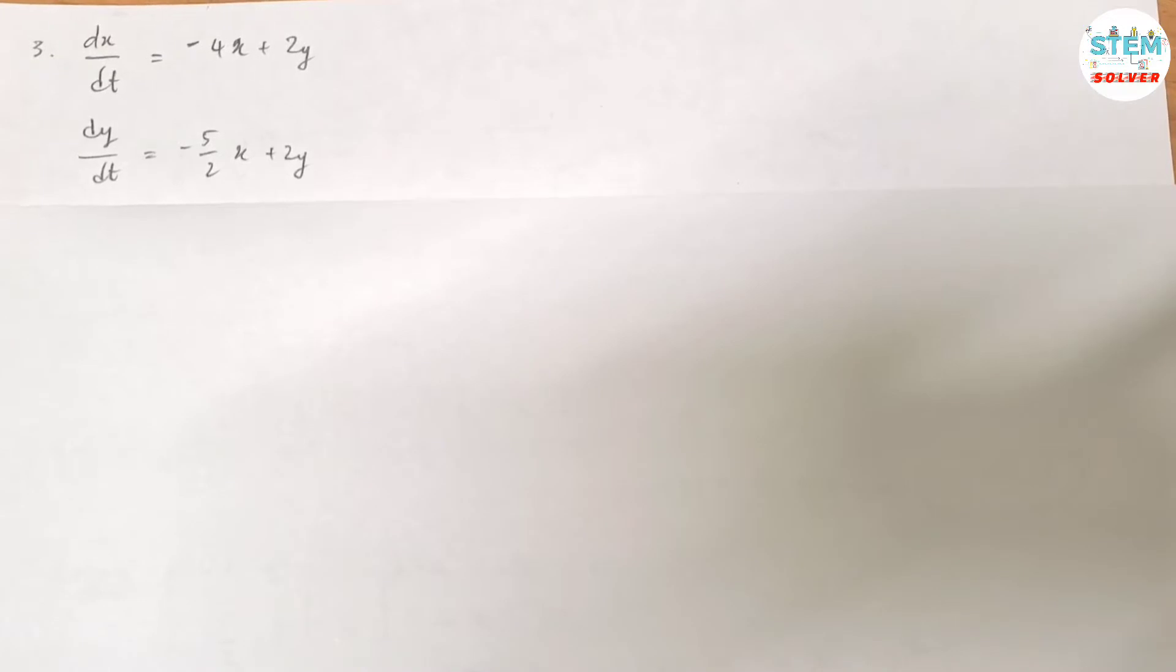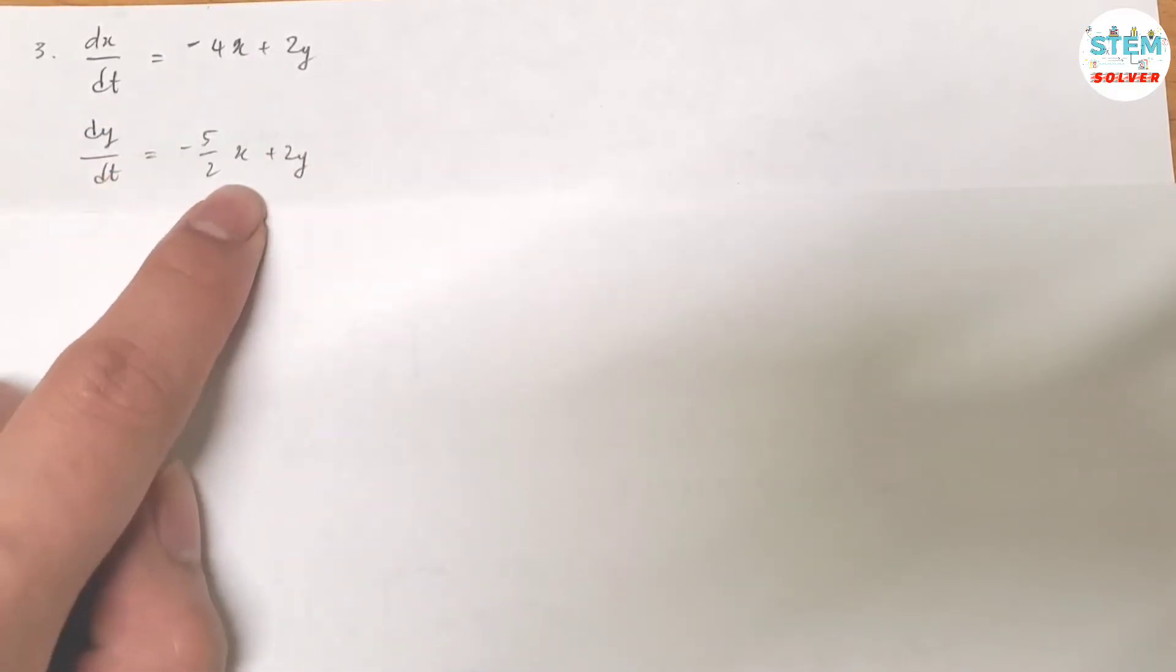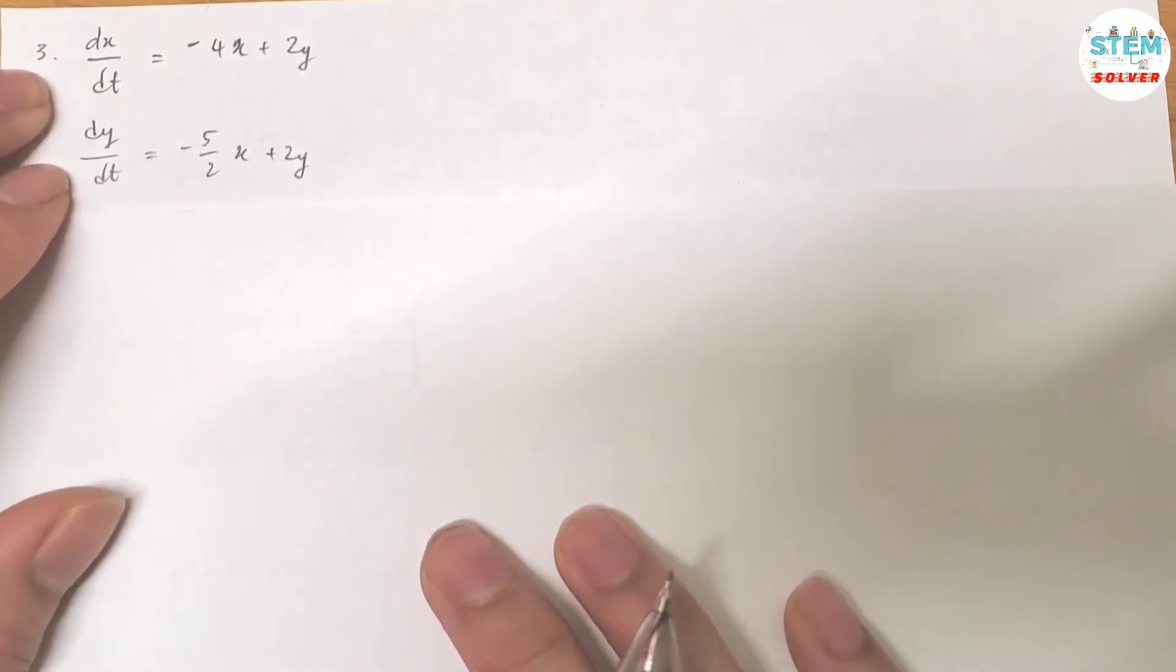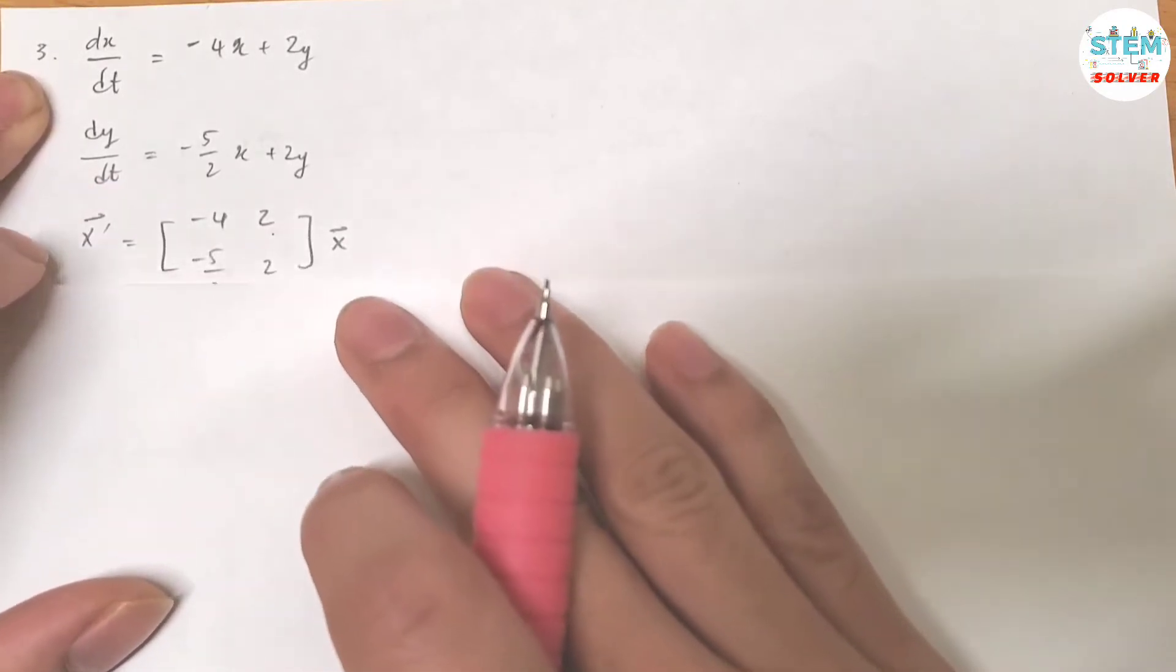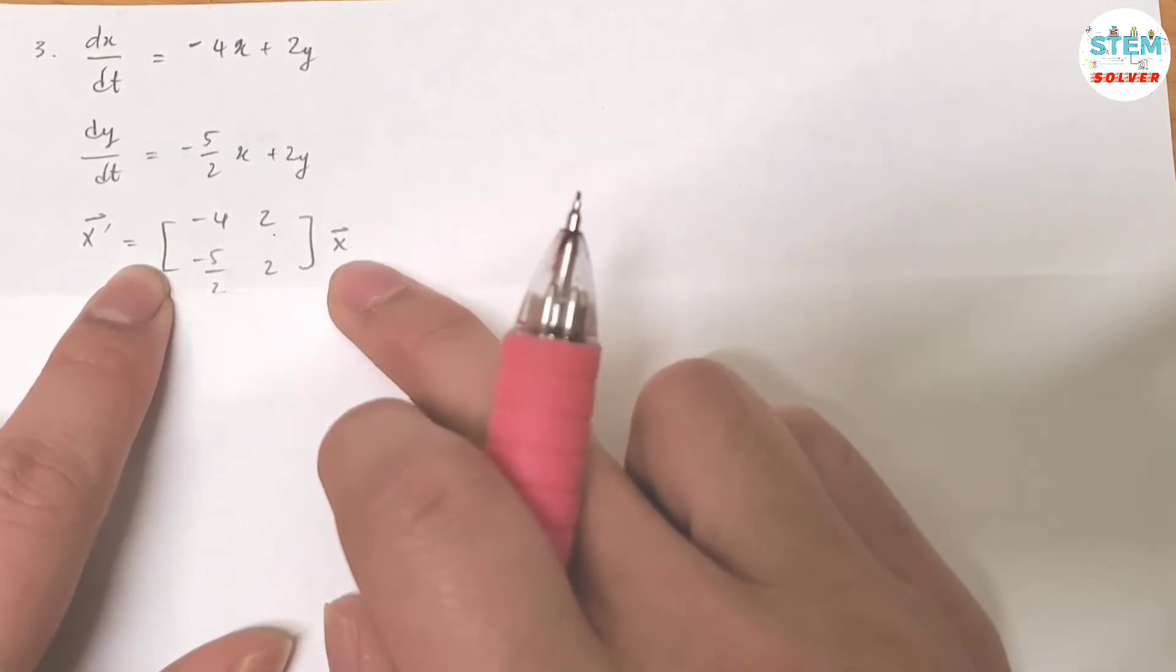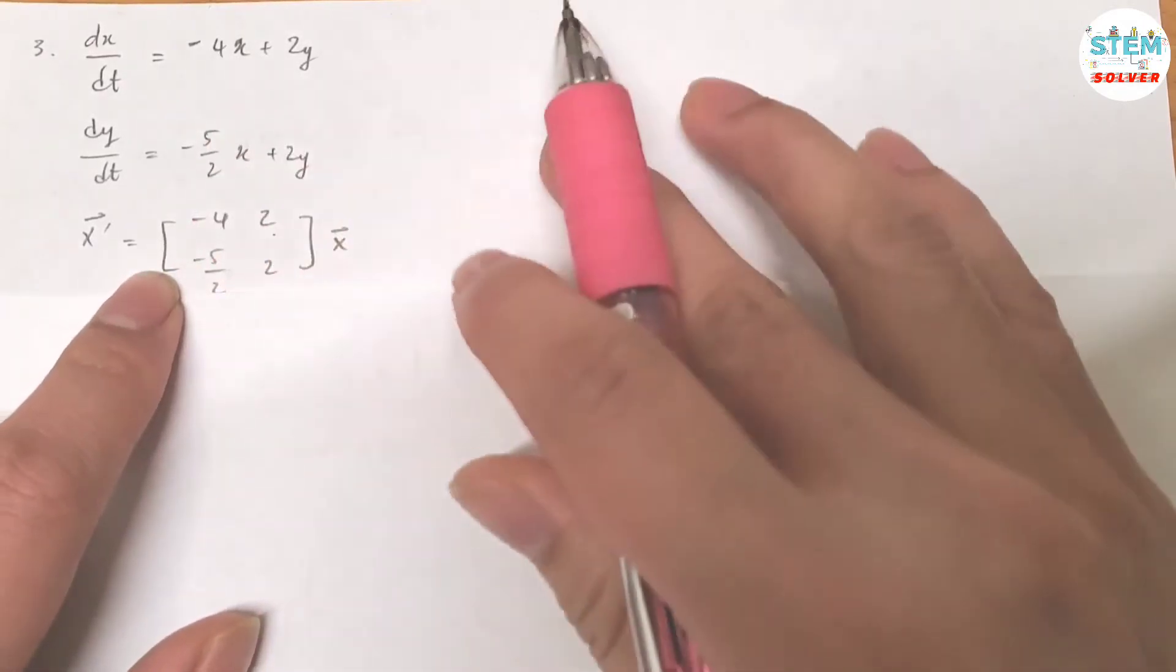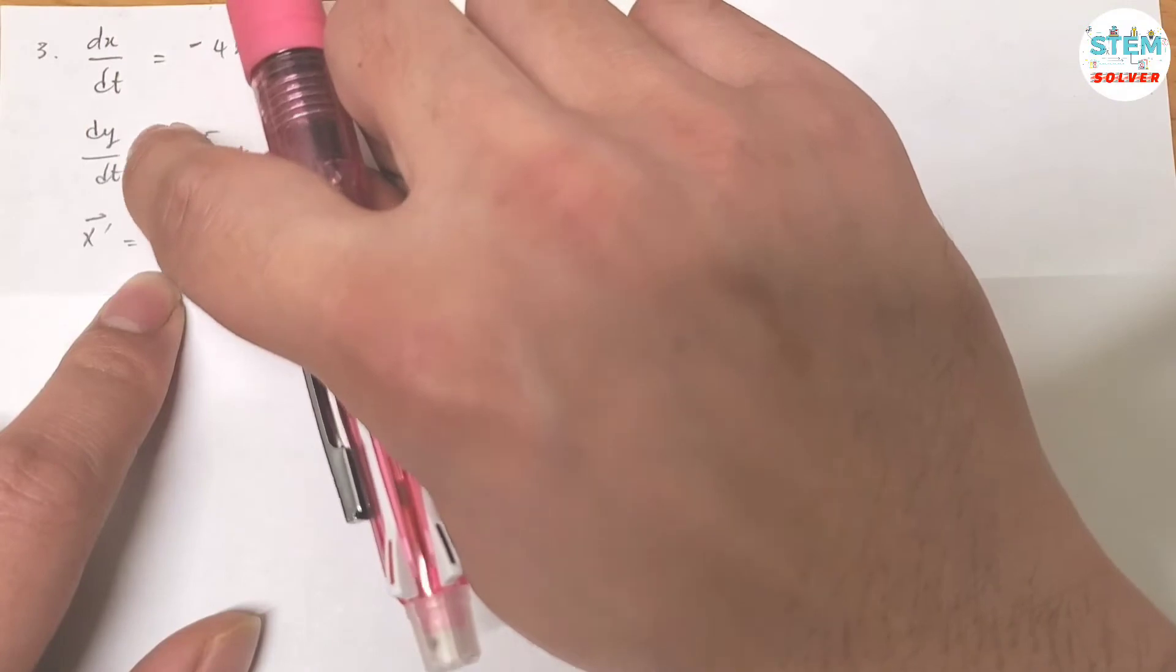Find the general solution of the given system. So here you are given dx/dt equals this, dy/dt equals this. First of all, you need to rewrite it. You need to put it into a standard form which is vector x̄ equals a matrix times vector x. This matrix is basically the leading coefficient of xy of dx/dt, dy/dt.